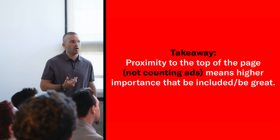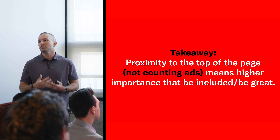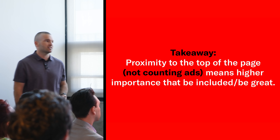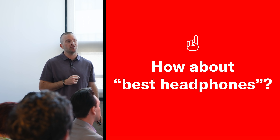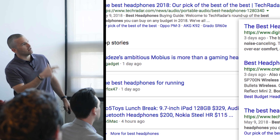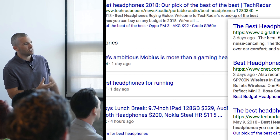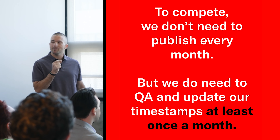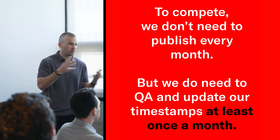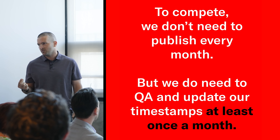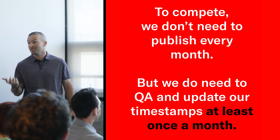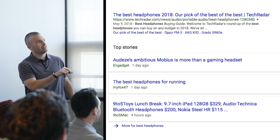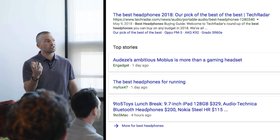My takeaway based on this analysis: look at the proximity to the top of the page on a search result to inform what should be included and what needs to be great in order to get rankings sustainably. 'Best headphones' is another interesting search result. We see news results and timestamps littered all across it — makes sense, it's technology, there are dates, people want the newest and best headphones. What I think is interesting is not just the idea of freshness, but the degree of freshness, which you can analyze on the search result.